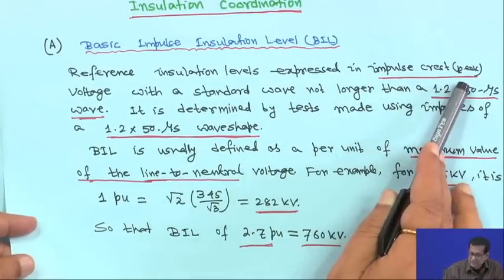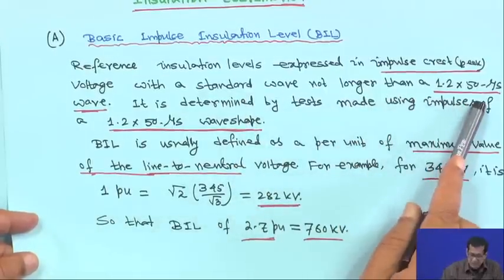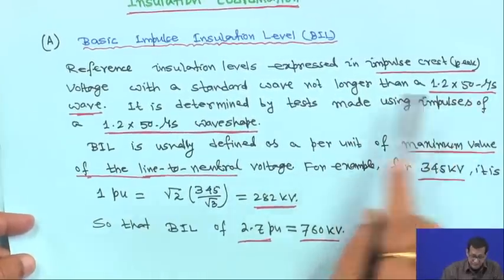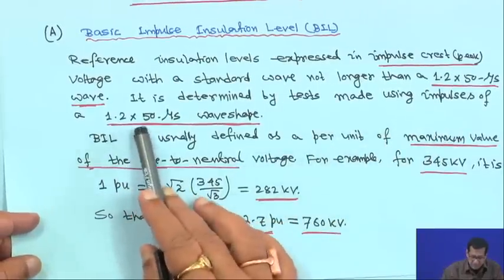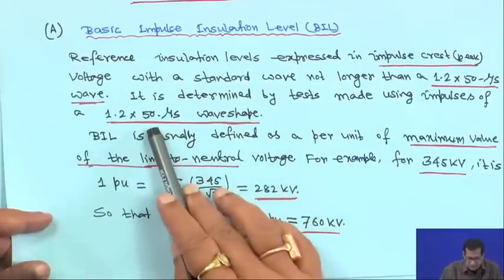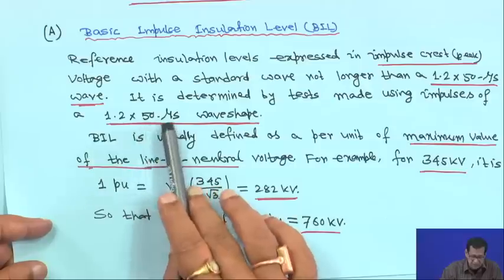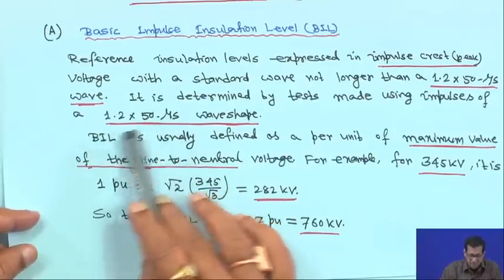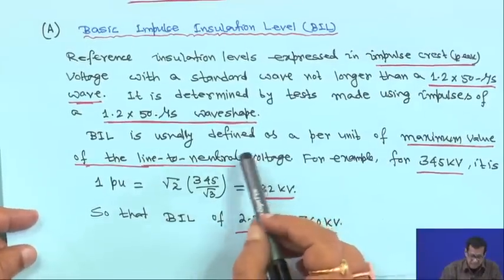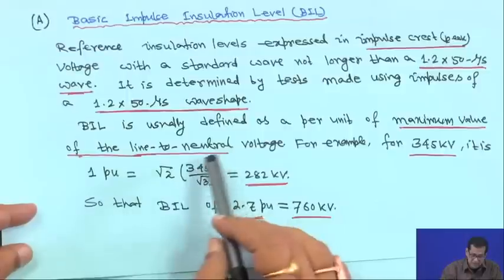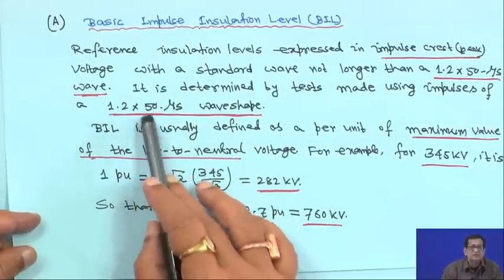The insulation level is expressed as the peak value with a standard 1.2×50 microsecond wave, where the peak is reached in 1.2 microseconds and 50 percent of that value is reached at 50 microseconds. It is determined by tests using impulses of 1.2×50 microsecond waves, though in practice the values may not be exactly these but close to them.